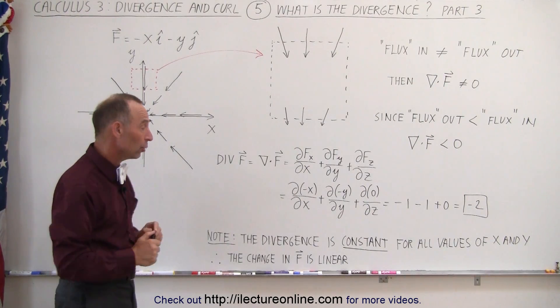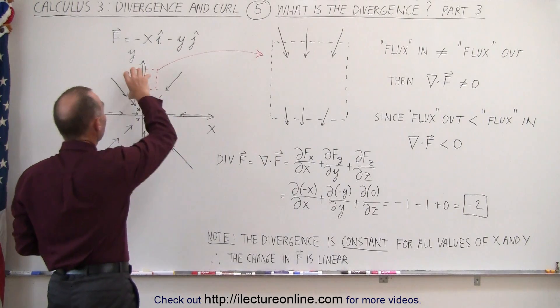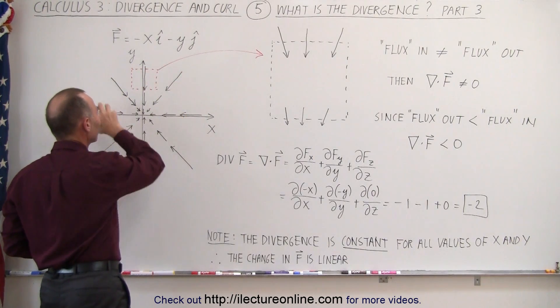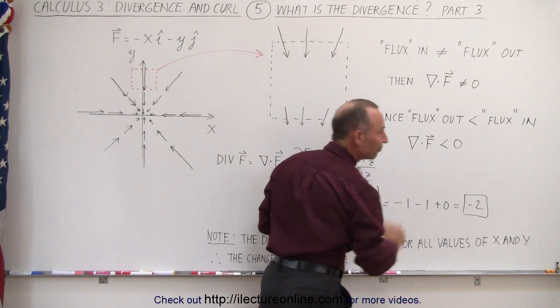Now, one more thing we should note: notice that it's a constant number, which means it really didn't matter where we picked the box. In all circumstances, we're always going to get a negative two.